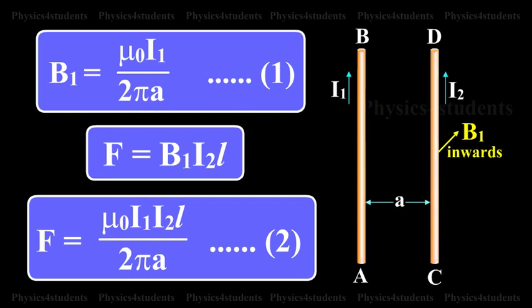Hence, force on a segment of length L of CD due to magnetic field B1 is F equals B1 I2L. Substituting equation 1, F equals mu0 I1 I2L by 2 pi A.